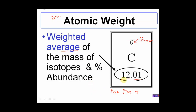So 12.01 is an average mass. It's not the mass of carbon — it is an average mass of all of carbon's different forms. Carbon comes in three different forms: carbon-12, carbon-13, and carbon-14. So this one box in the periodic table represents carbon-12, carbon-13, and also carbon-14. 12.01 is specifically a weighted average, and that's something we'll be discussing in the second half of the lesson.